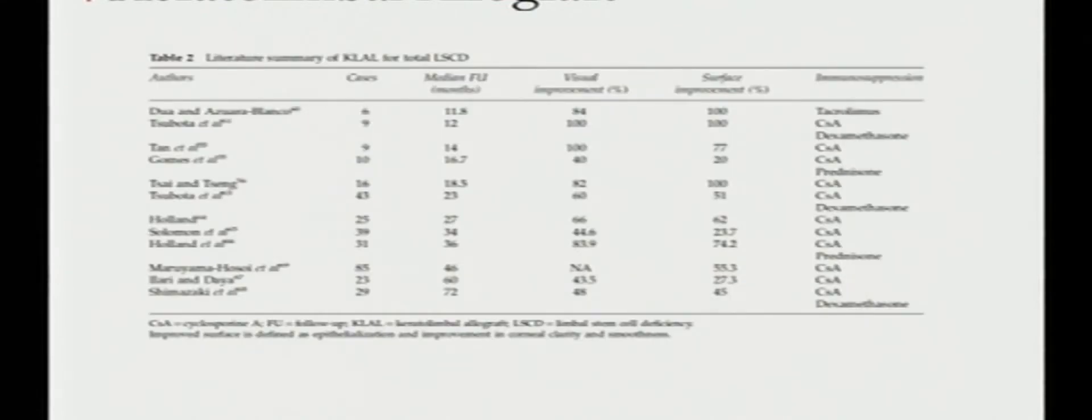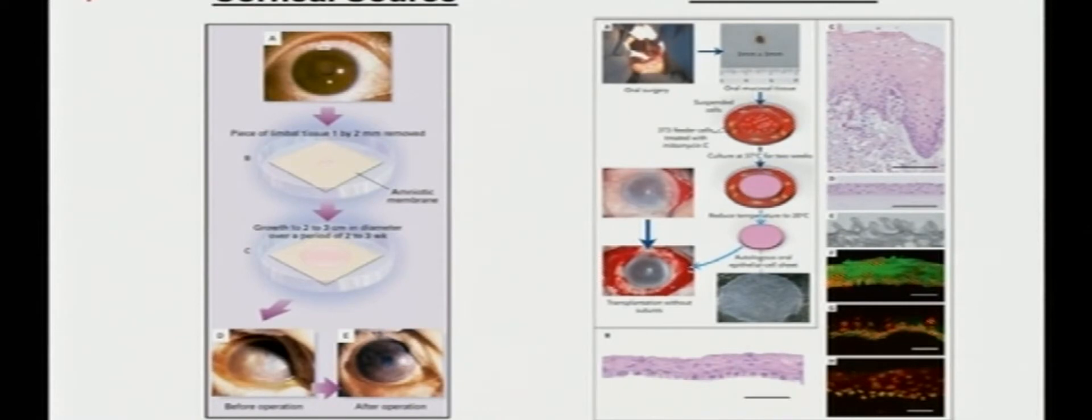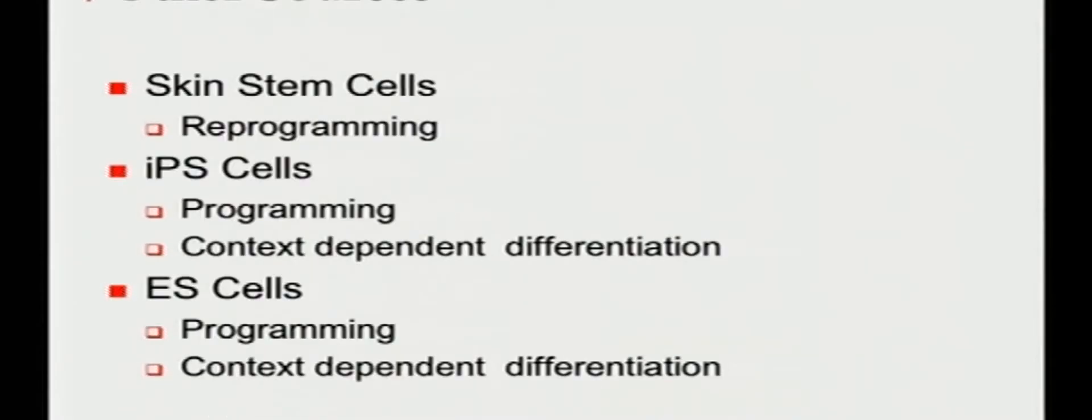Allographs are not as successful as autographs when doing conjunctival limbal grafts given the need to immunosuppress and thus the idea of cultivating stem cells from a variety of sources whether they're corneal source taking small biopsies of limbus or even oral sources or others have been proposed and initially by Pellegrini, New England Journal, and Nishida, New England Journal. Sources of stem cells have been looked at either reprogramming skin stem cells which is something that we're doing in my laboratory. Teru Nishida and others published in Nature recently using IPS cells to be reprogrammed and embryonic stem cells have been proposed as well.